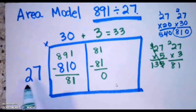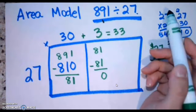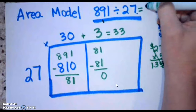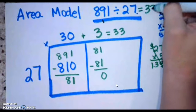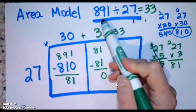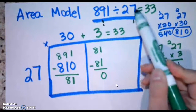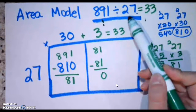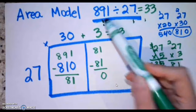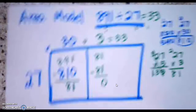To find my final quotient, I take my 30 plus 3, which gives me 33. So 27 times 33 equals 891. The quotient times the divisor should always equal the dividend, and 33 times 27 does, in fact, equal 891. That's how to solve a problem with an area model.